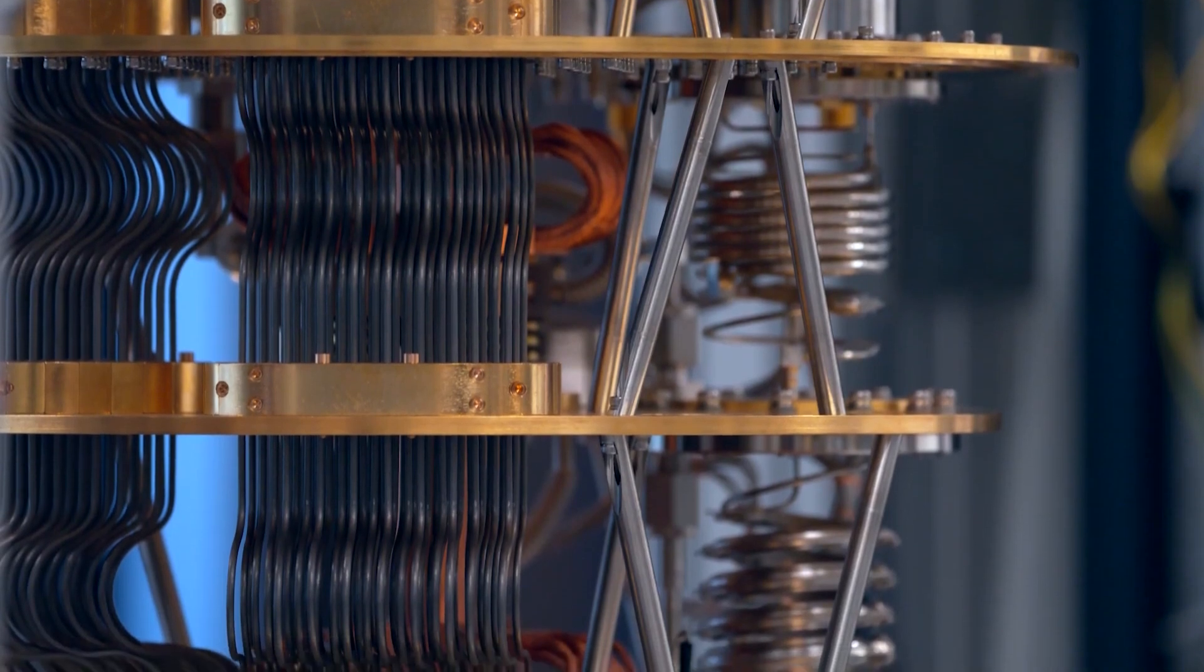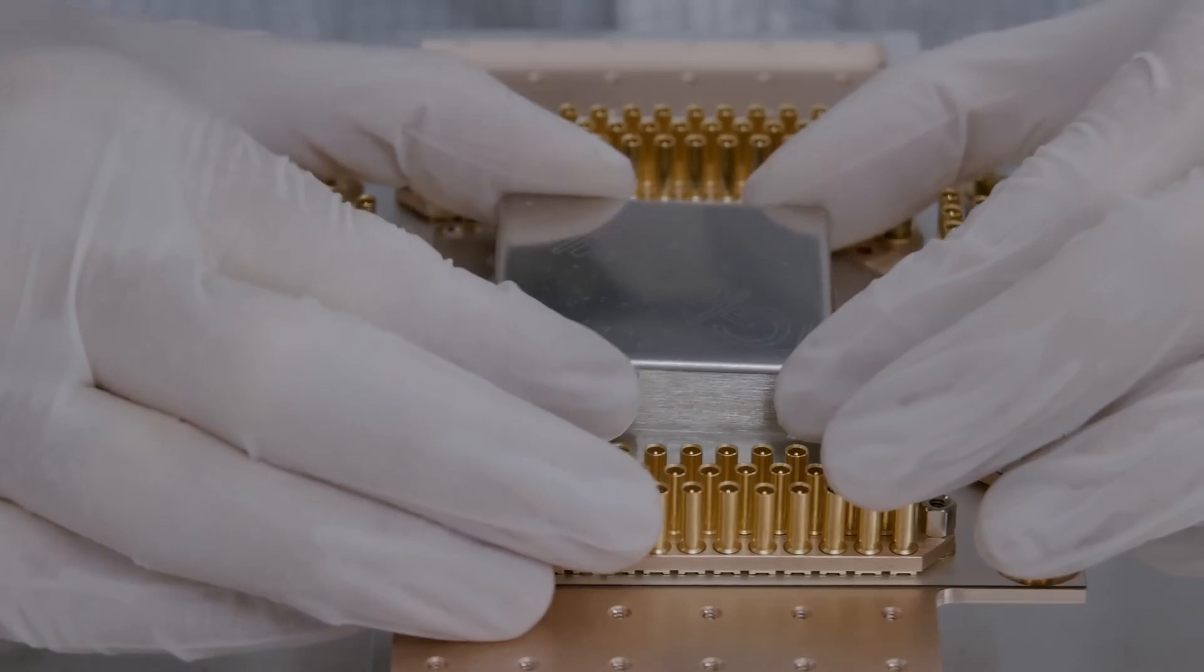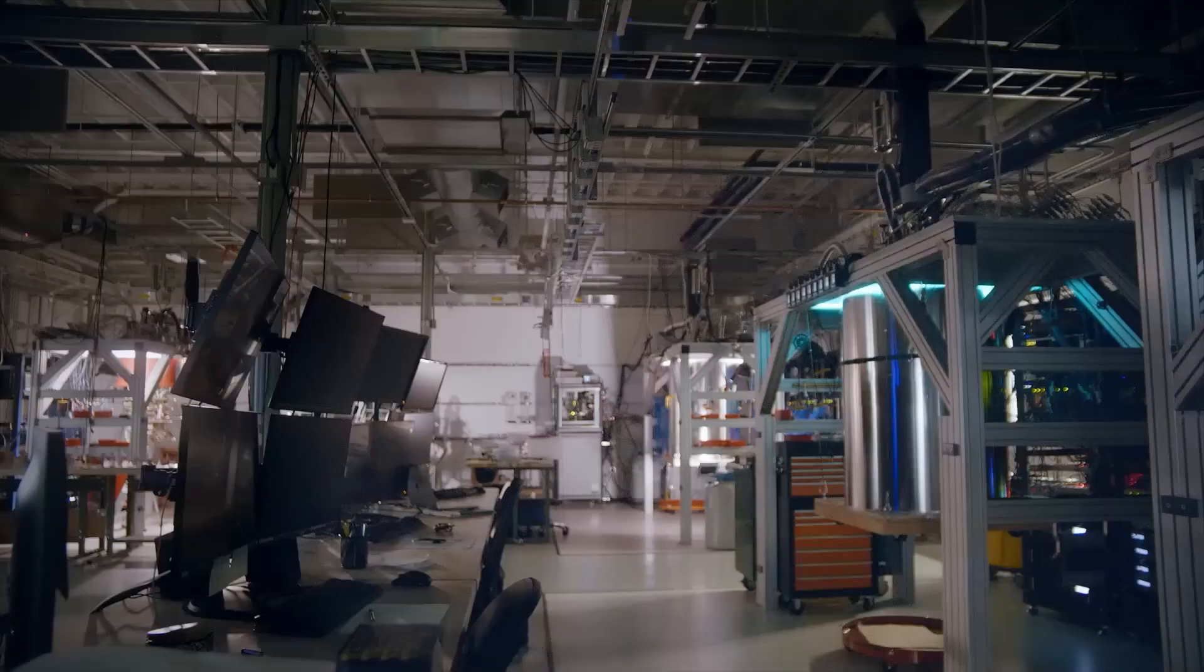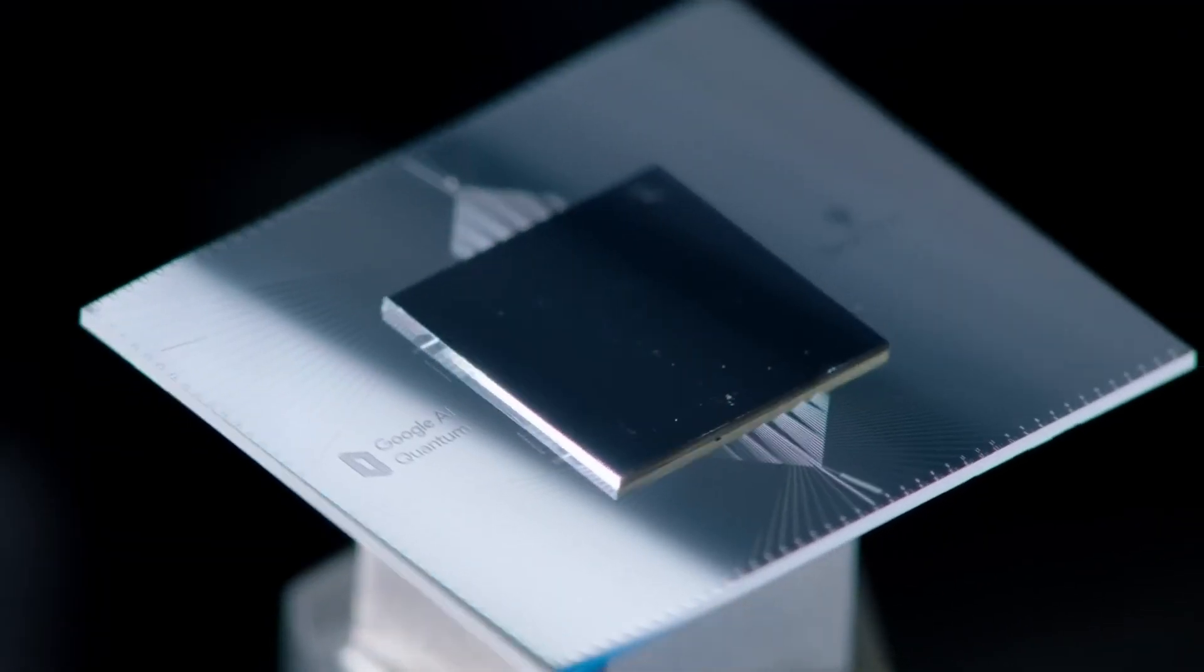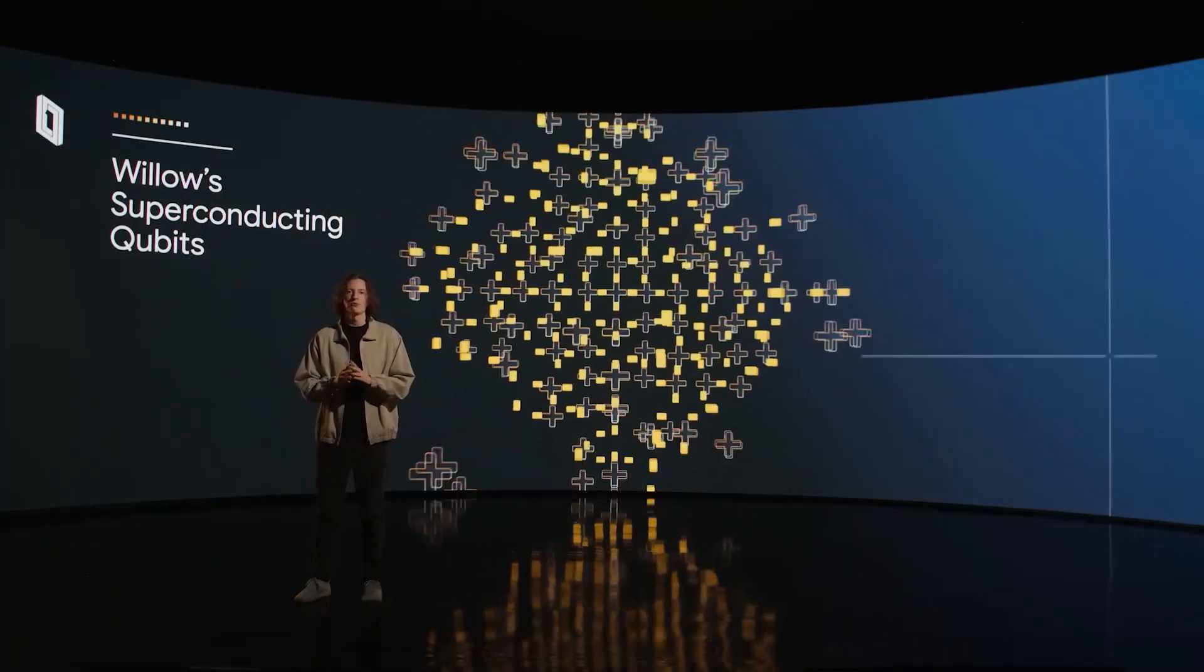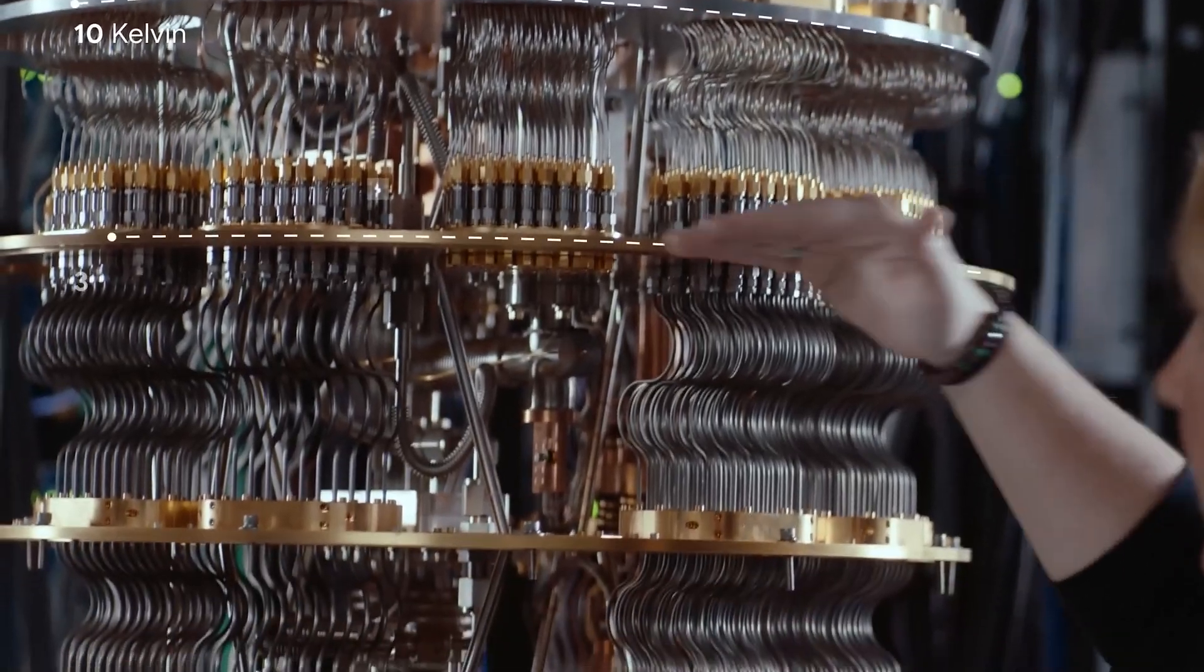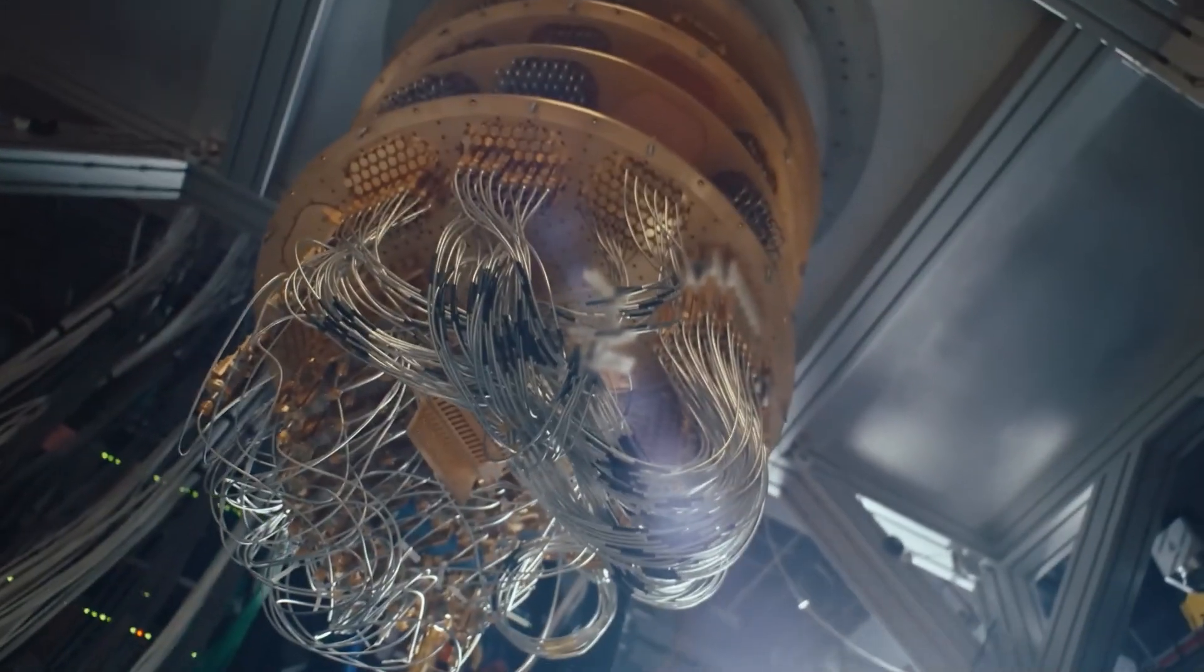And this same RCS benchmark was used in Google's landmark demonstration of quantum supremacy in 2019 with their Sycamore processor. Google showed that their quantum computer could solve an RCS problem in 200 seconds, which would take the best classical supercomputer an estimated 10,000 years. The more qubits and circuit depth the quantum chip has, the more complex RCS grows. By demonstrating the ability to perform tasks that seem impossible for classical computers, quantum computing asserts its potential for real-world applications.